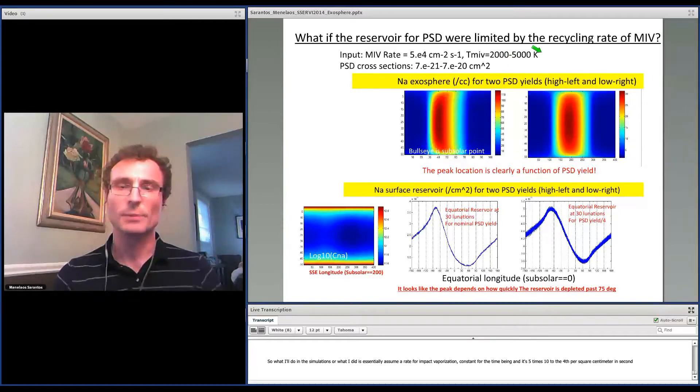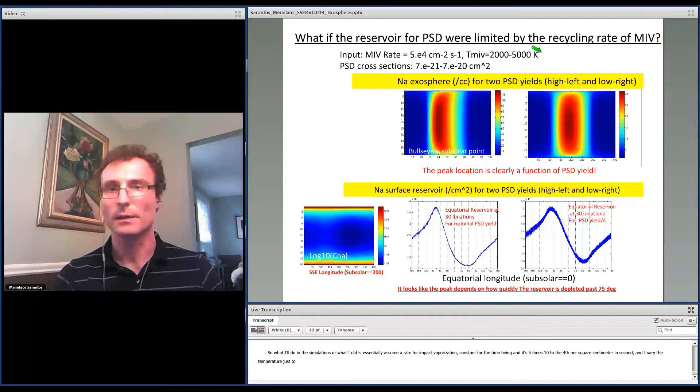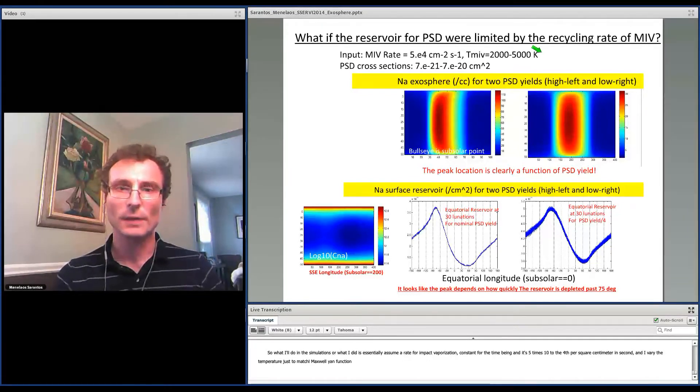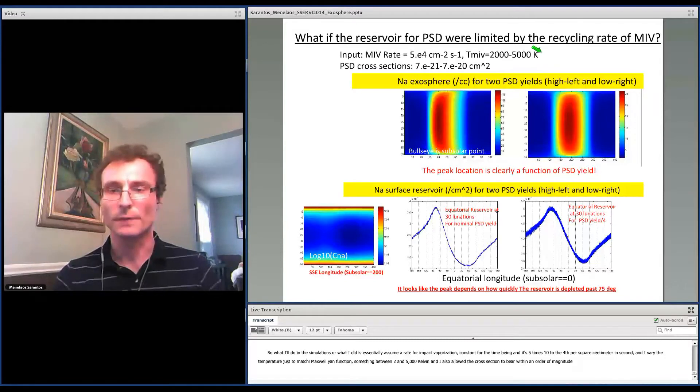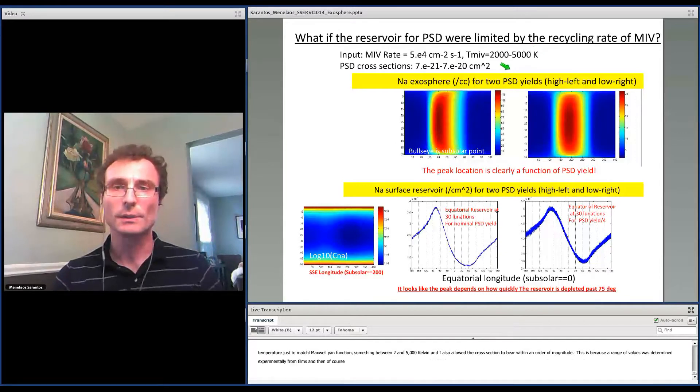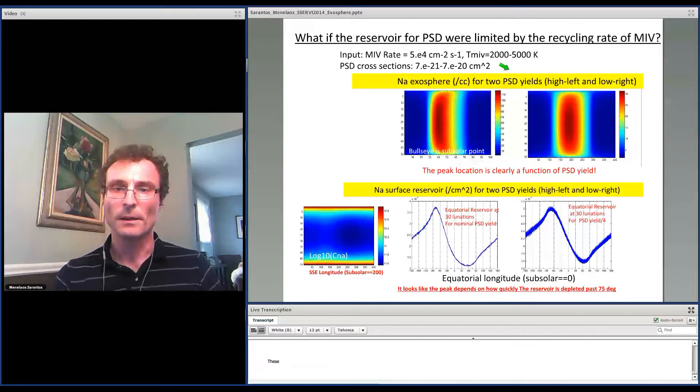And I vary the temperature, just the Maxwellian velocity distribution function of the initial ejecta, with something between 2,000 and 5,000 Kelvin. And I also allow the cross-section for photo-stimulated desorption to vary within an order of magnitude. This is because a range of values was determined experimentally from thin films. And then of course we have porosity.